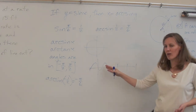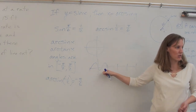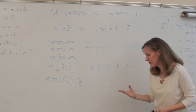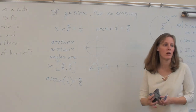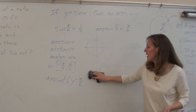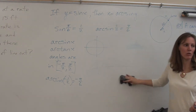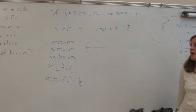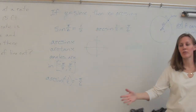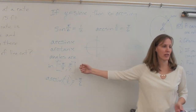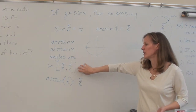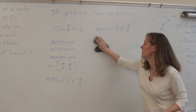All values of sine are contained within those two quadrants. So no matter what your sine value is — any number from negative 1 to 1 — all of those angles can be found there. Everything else is just repetitive. So for our purposes, all of your answers for inverse trig functions will be in those two quadrants.